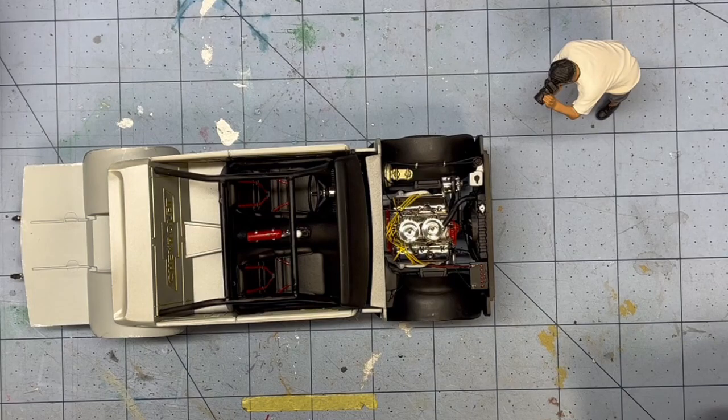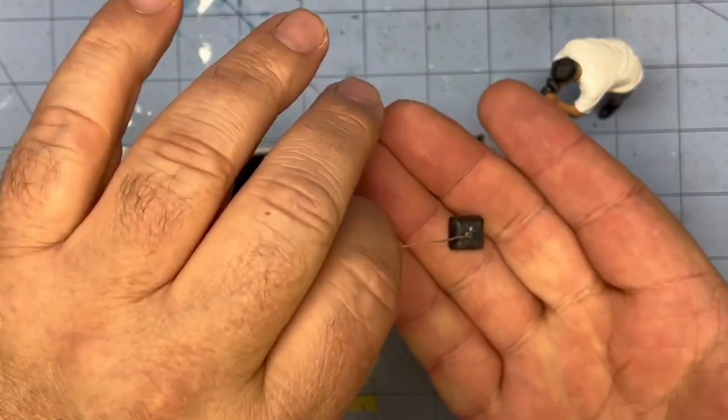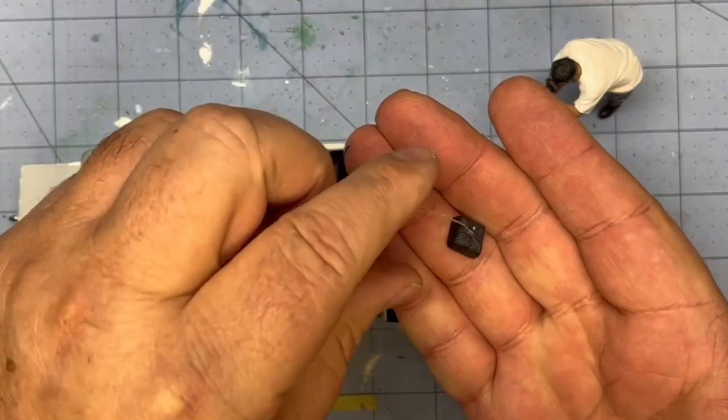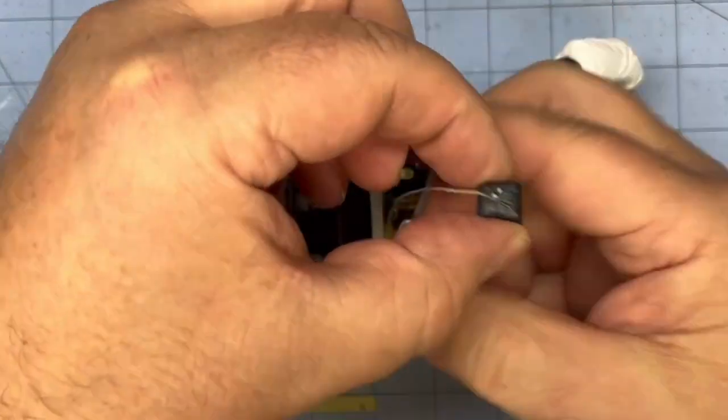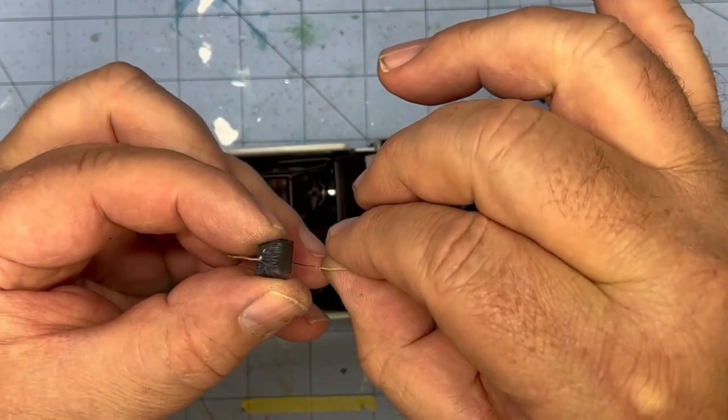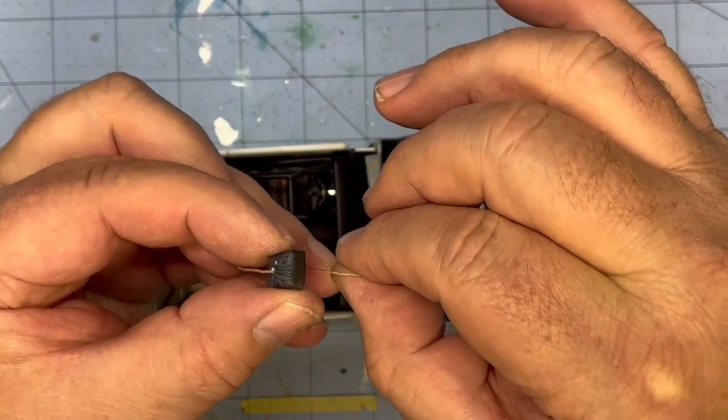My parachute is about ready to go. Once I get everything glued on, I'll put the parachute on. I'll run the chute line underneath, and I'll tack it up underneath the engine.